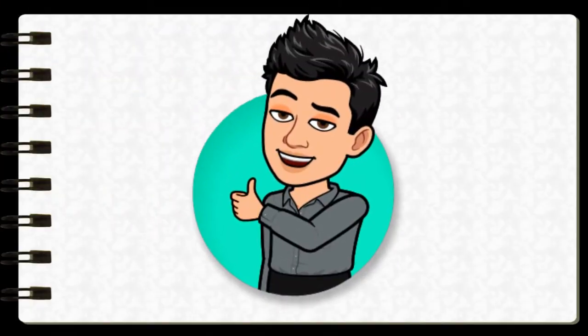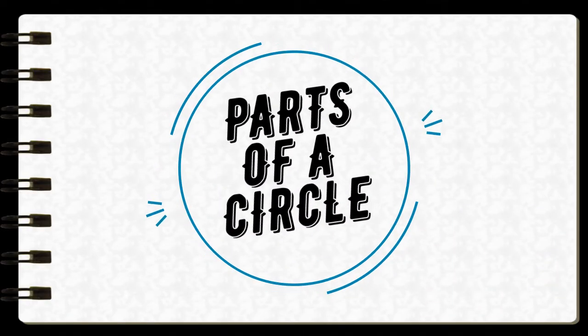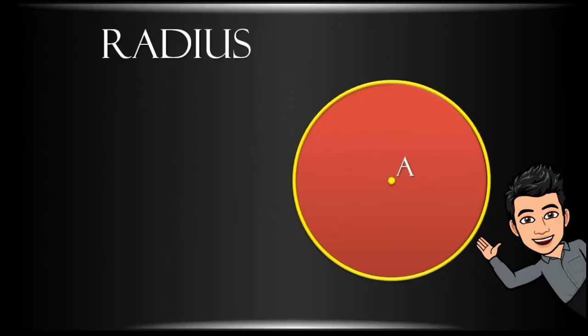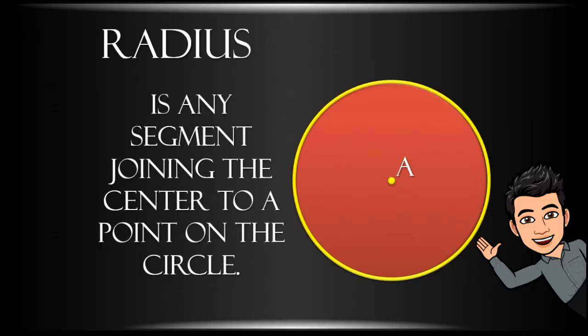Amazing, right? Now let's identify the parts of a circle. Let's begin. The radius is any segment joining the center to a point on the circle. Line segment AB is a radius of circle A.